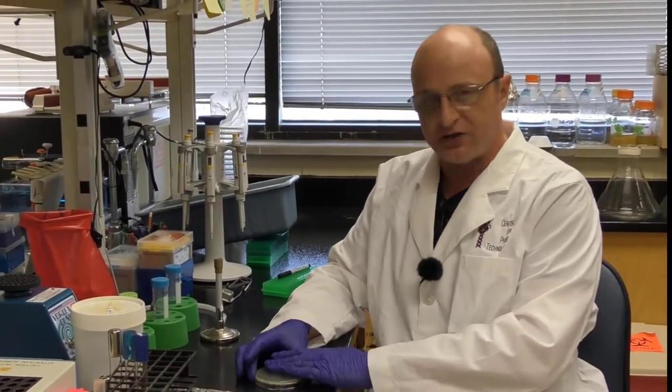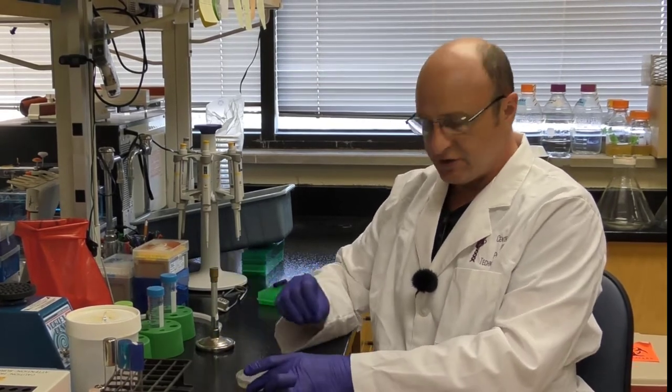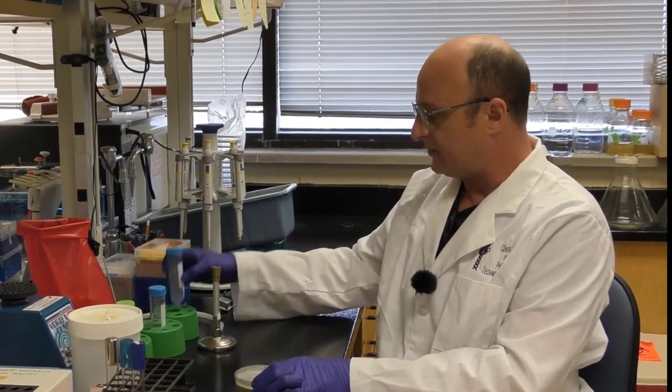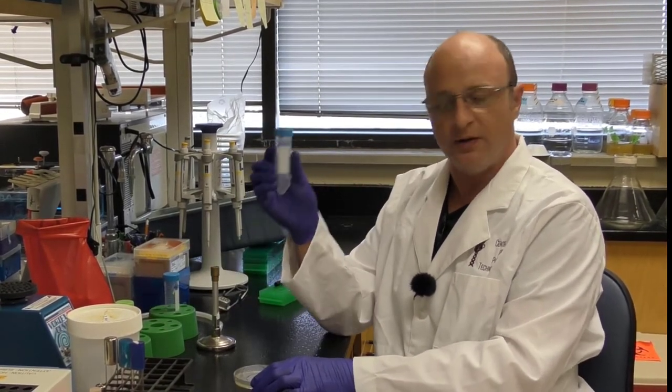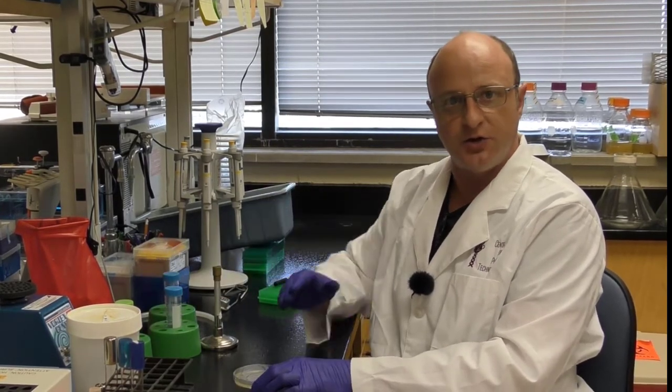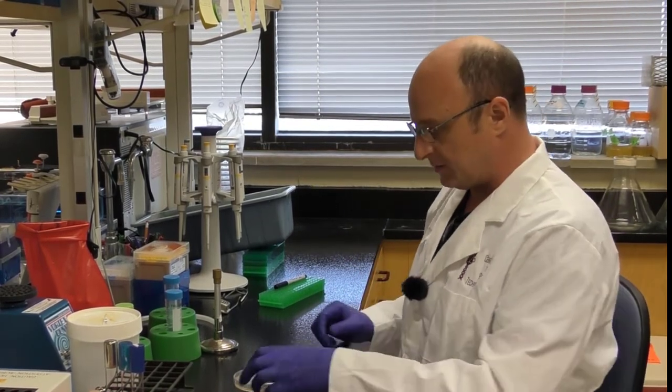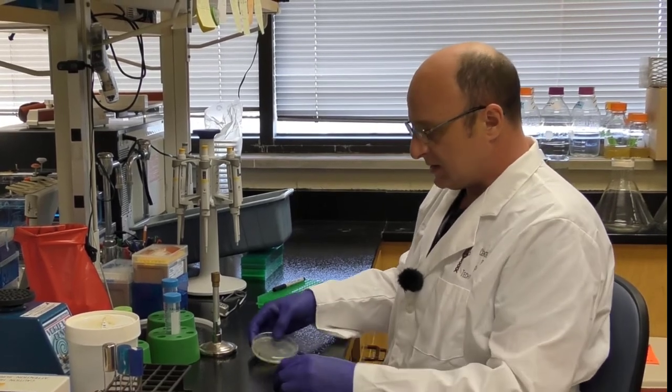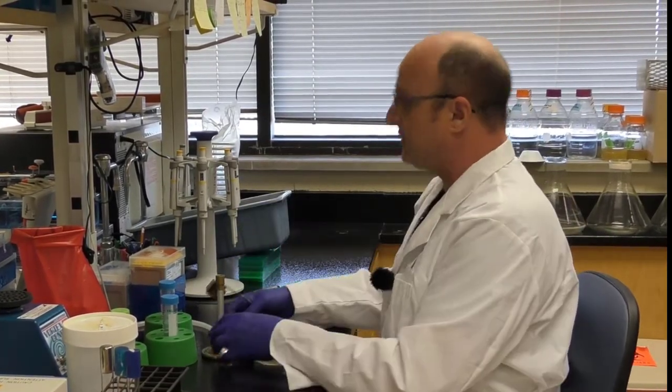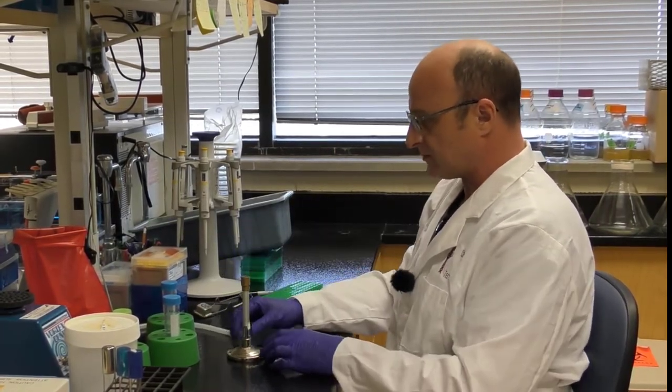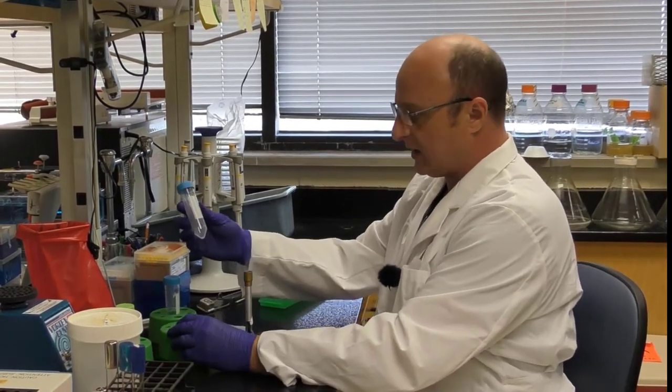So what we now need to do is extract the phages from that soft agar overlay. So what we'll do is we'll add some buffer to the top of this plate, and then we're just going to scrape gently off all of that soft agar with all of the cells and everything into a labeled tube. Then we will centrifuge that tube down to pellet all the debris and all the agar, and then we'll aliquot off the high-titer lysate from the top of that medium. So as always, we make sure that our flame is in a safe place, our bench has been sterilized, of course, we're ready to work. My tube is already labeled up. I have my lambda buffer.